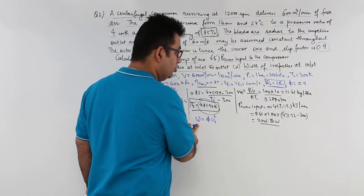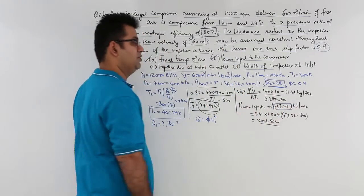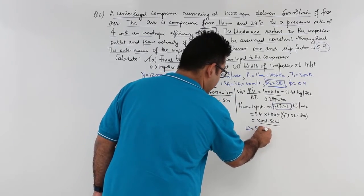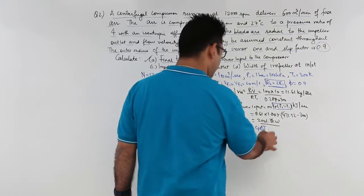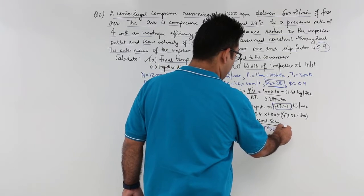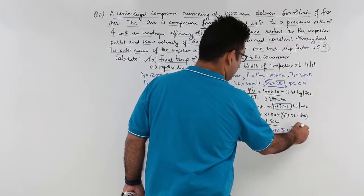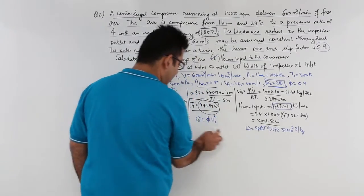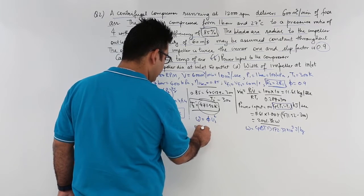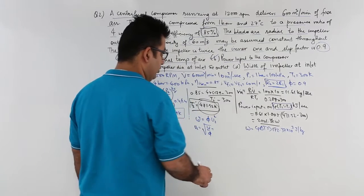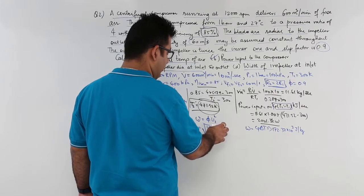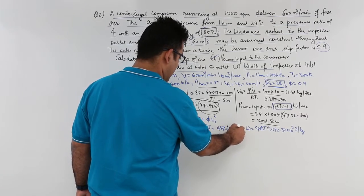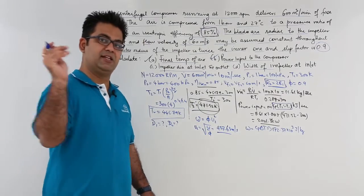And this w has to be found out from this particular part of the equation. So this w is basically Cp into delta T. So w will be equal to around 172.37 into 10 to the power 3 joules per kg. Now why joules? Because this has to be in meters per second not kilometers per second. So you put this value over here and find out u2. So u2 is equal to under root w upon phi which is equal to around 437.63 meters per second. So this is the value of u2 that is the tangential velocity at the outlet.